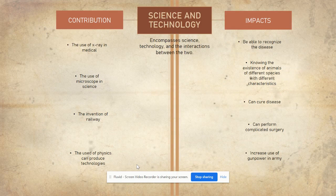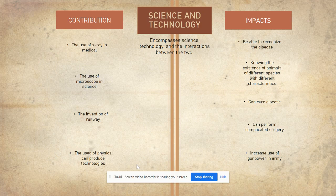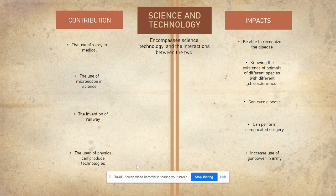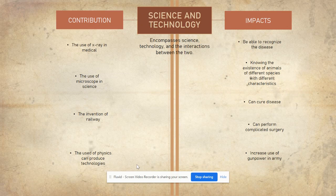The next subtopic is about Science and Technology. Science and technology are related to each other as they give impacts to society in the 19th century. It encompasses science, technology, and the interaction between the two. Most technology in the 19th century can be used in science, such as biology, chemistry, and physics. For example, the use of X-rays in medicine to find out diseases in the body.